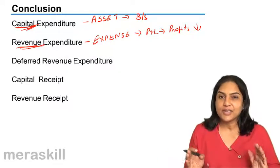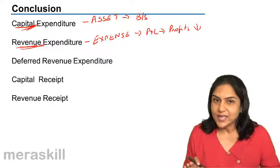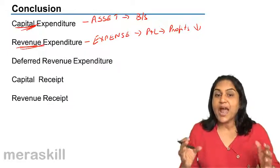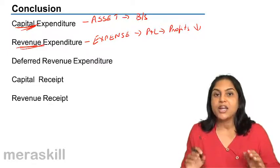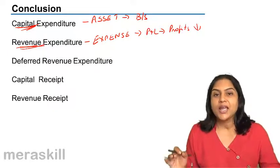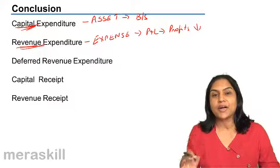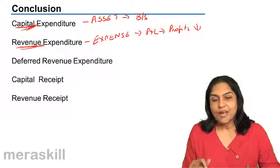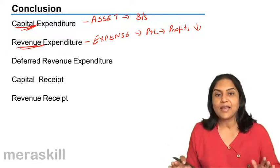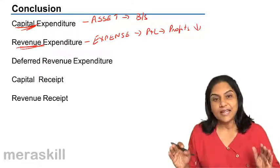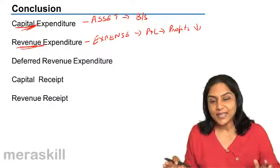Another distinction, another way to understand is that while capital expenditure is spent for acquisition of an asset in order to improve its efficiency, improve its productivity, improve its revenue earning capacity. But a revenue expenditure is spent in order to maintain the asset in that condition, maintain the asset in that condition.